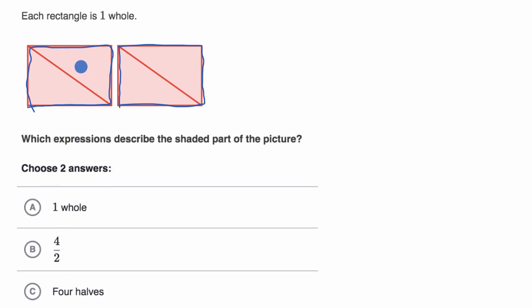So before I even look at the choices, there's different ways I could represent this. I've already talked about that if each of these rectangles is a whole, we have two of them. So I could say this is two wholes. That's one way to represent it.